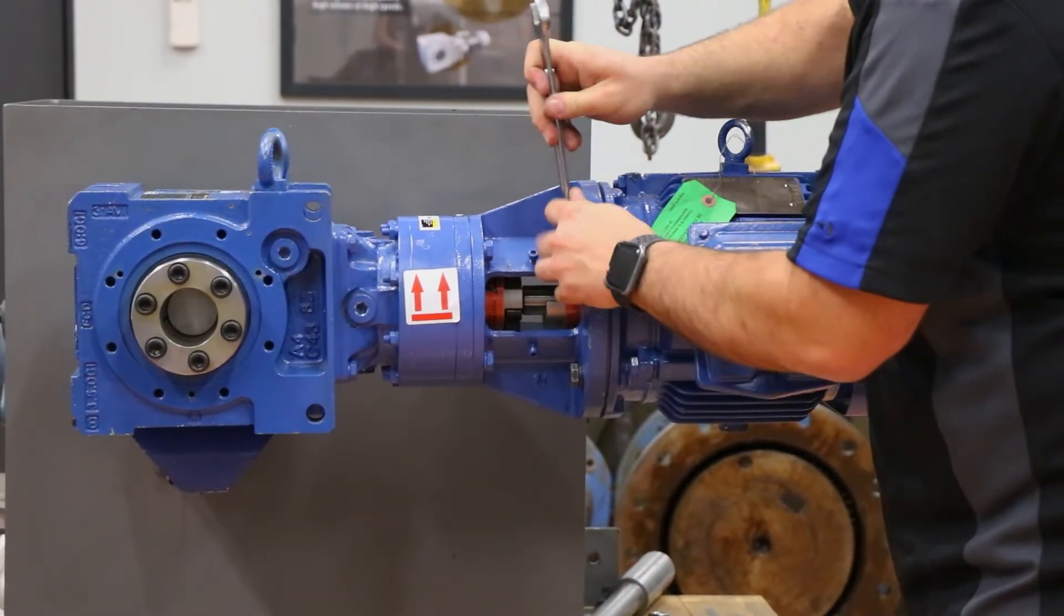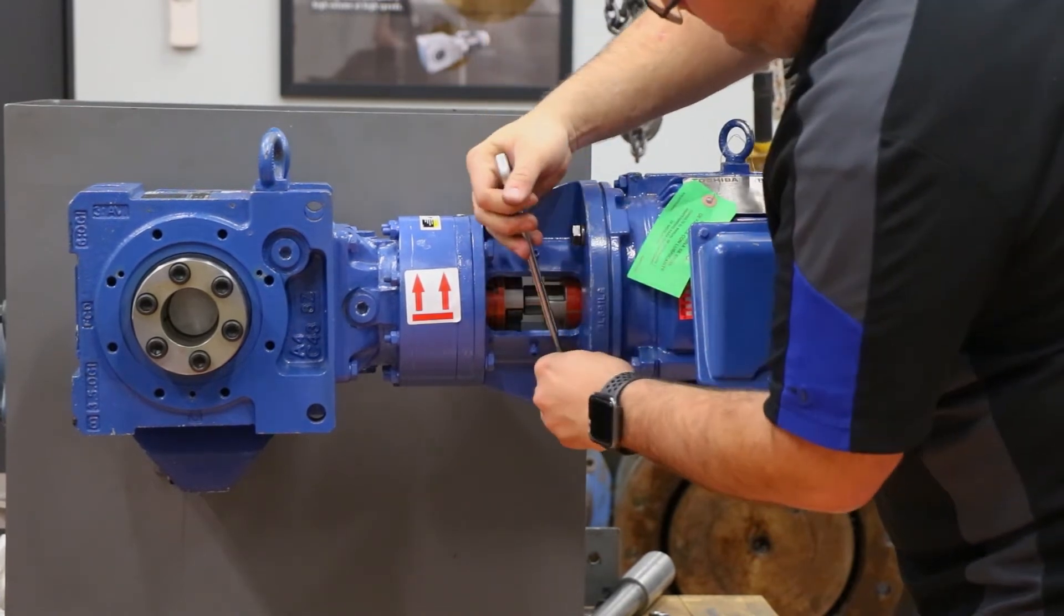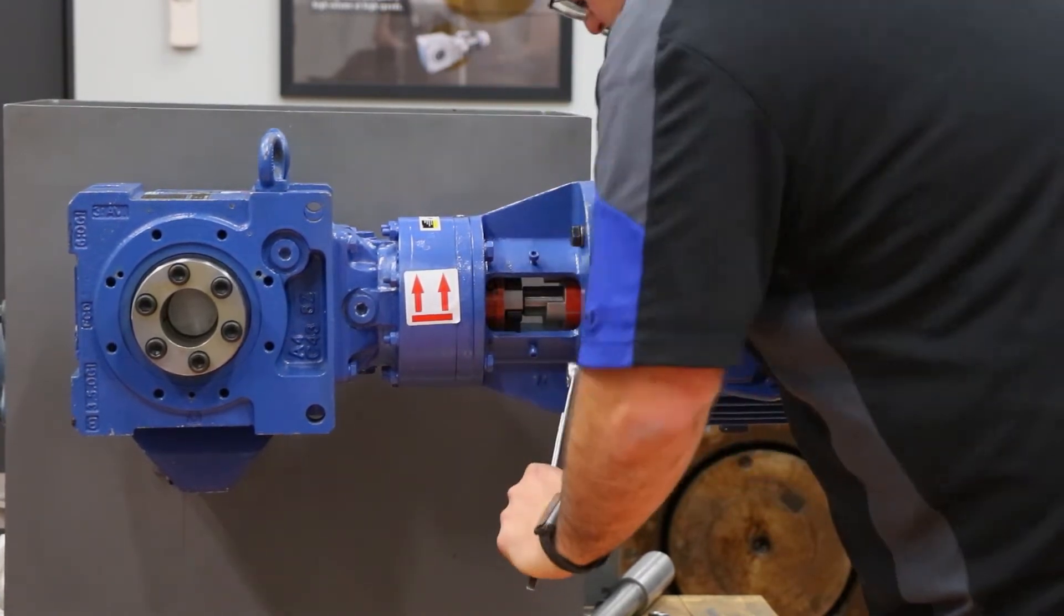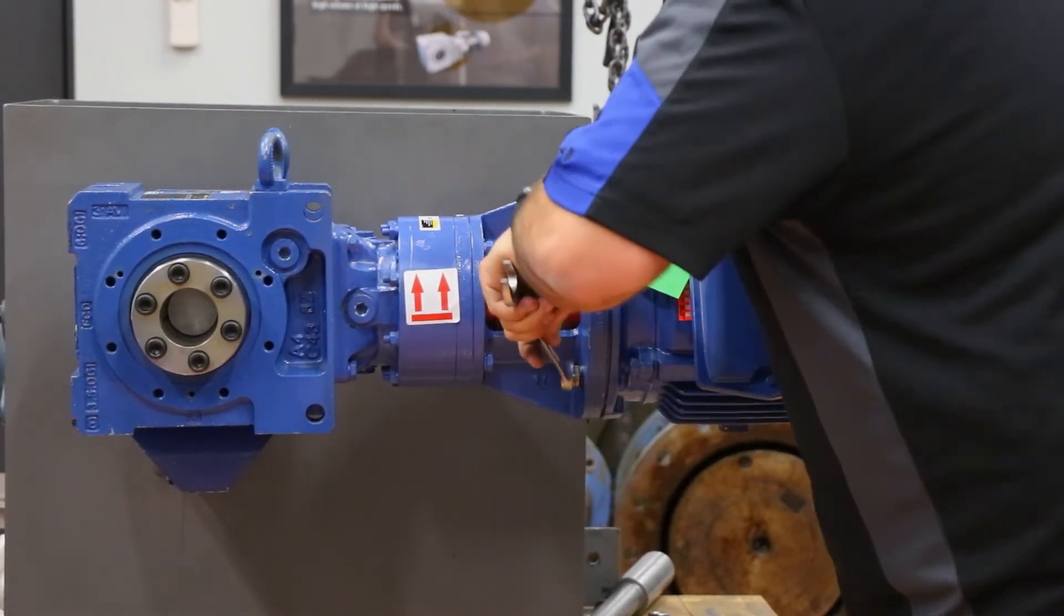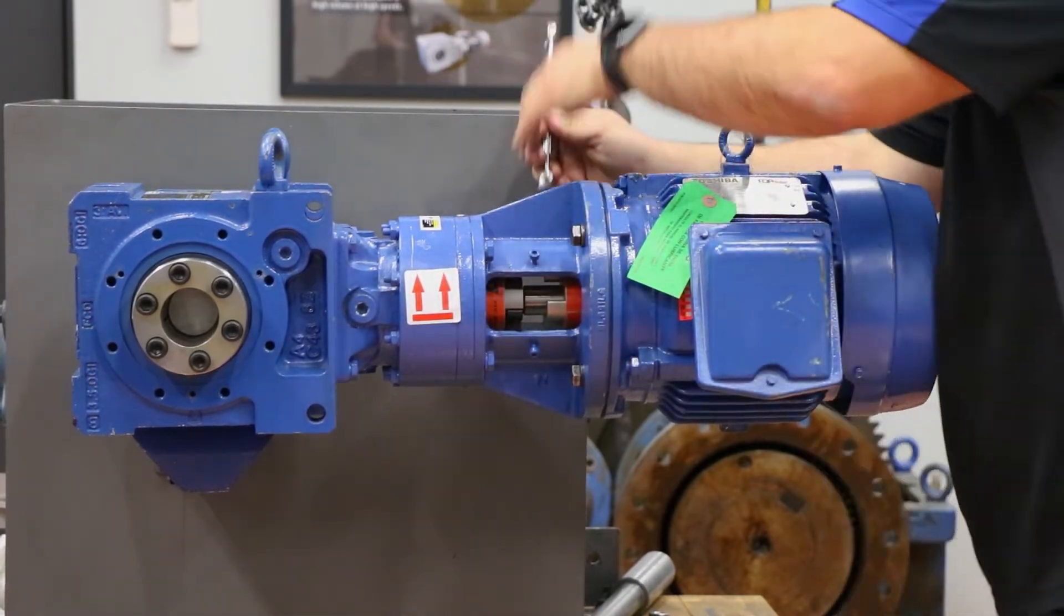Once all four of them are nice and tight and started correctly, you can go around with the wrench and tighten them up in a circular pattern. You can do a star pattern as well—it's not as critical. You just want to make sure the pilot on the motor is nice and snug to the gearbox C-face adapter.